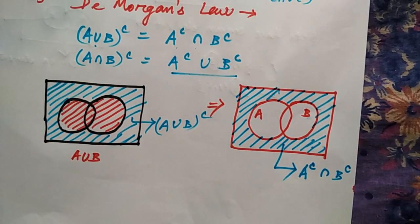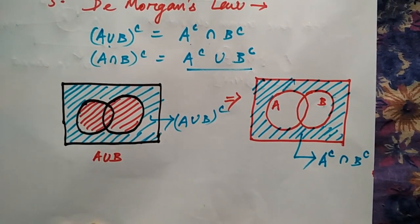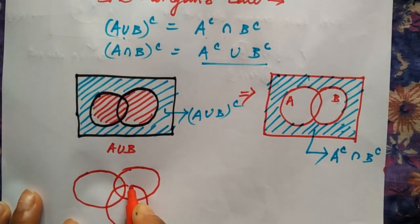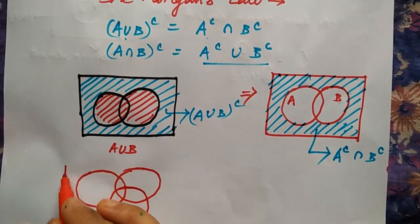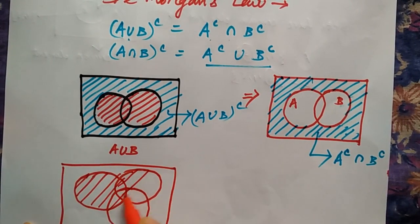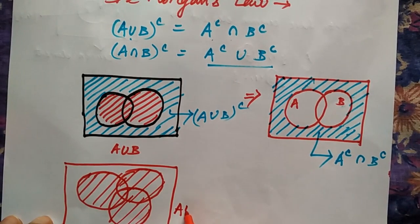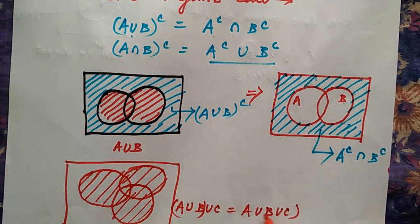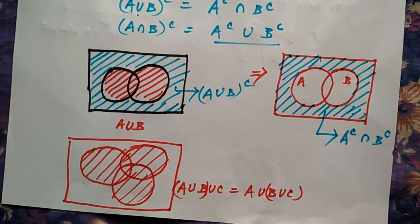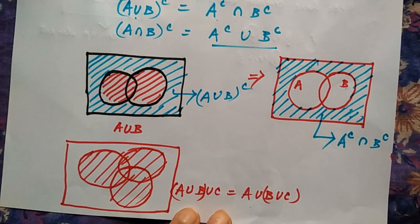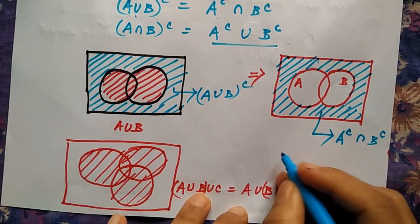For the associative law with three sets A, B, and C: A union (B union C) is shown in the Venn diagram as the union of all three sets. It doesn't matter whether you place the bracket between the first two or the last two, because you are taking the union of all three either way. That is the associative law.